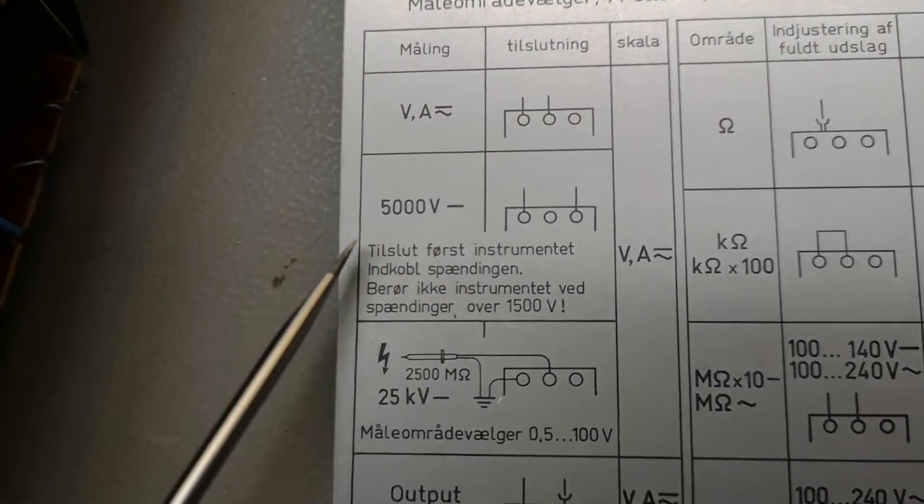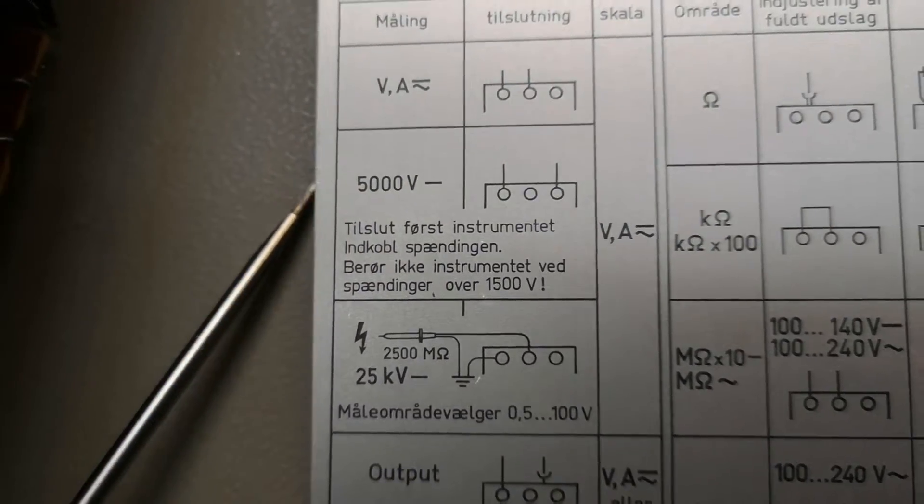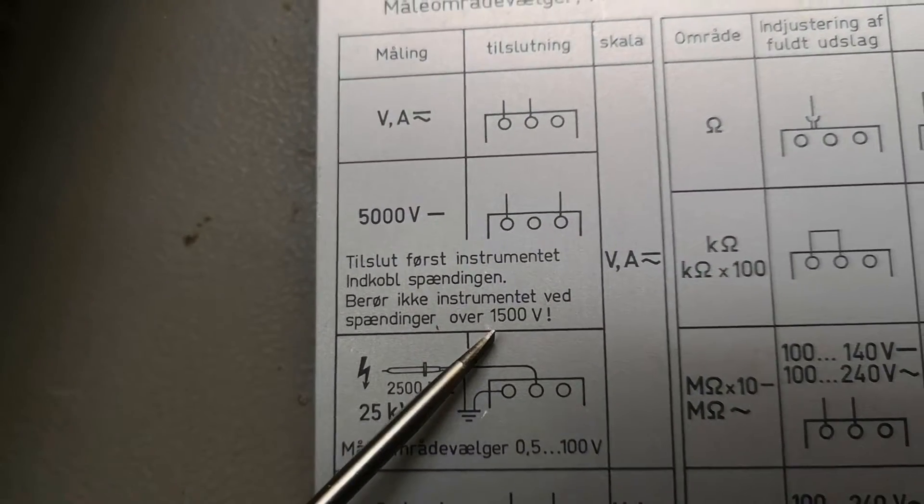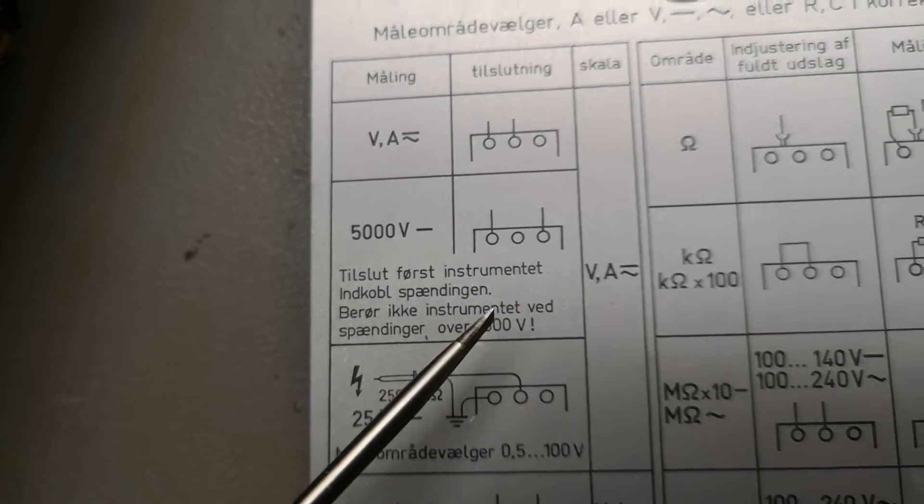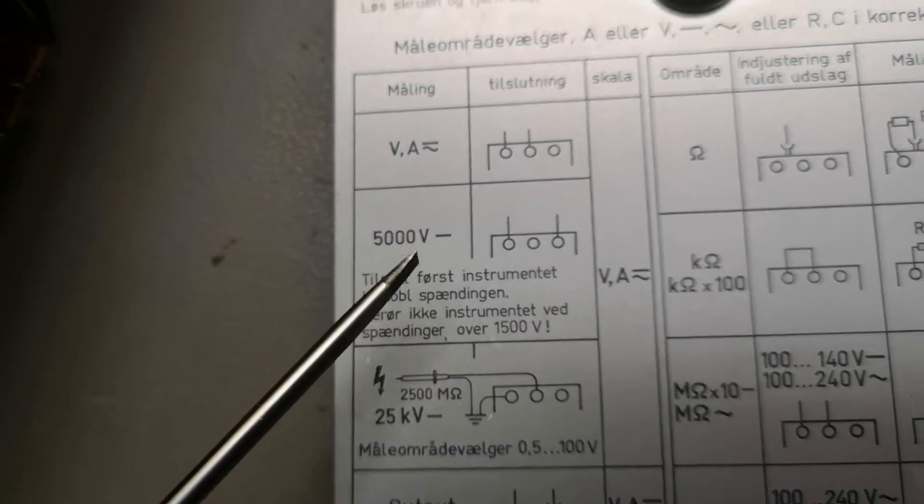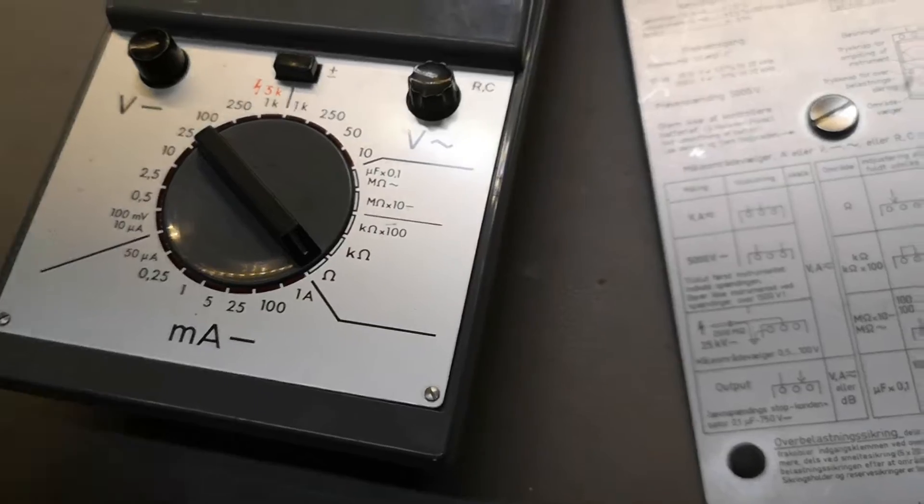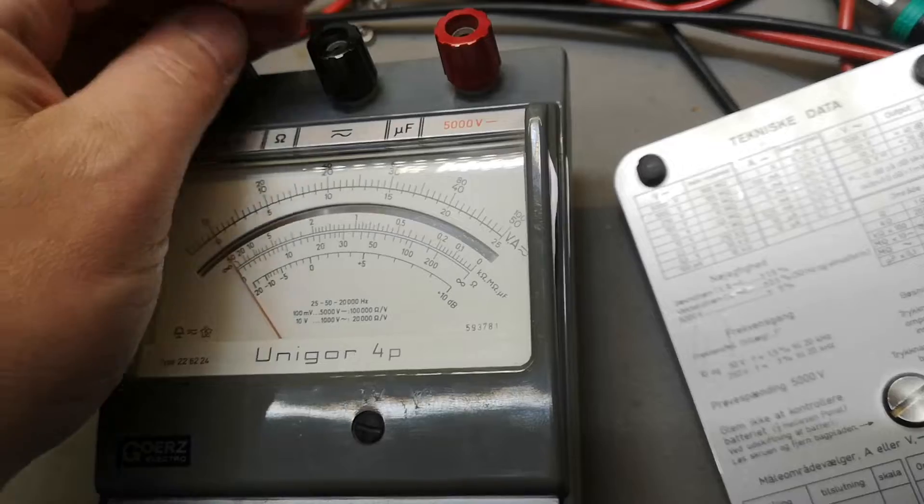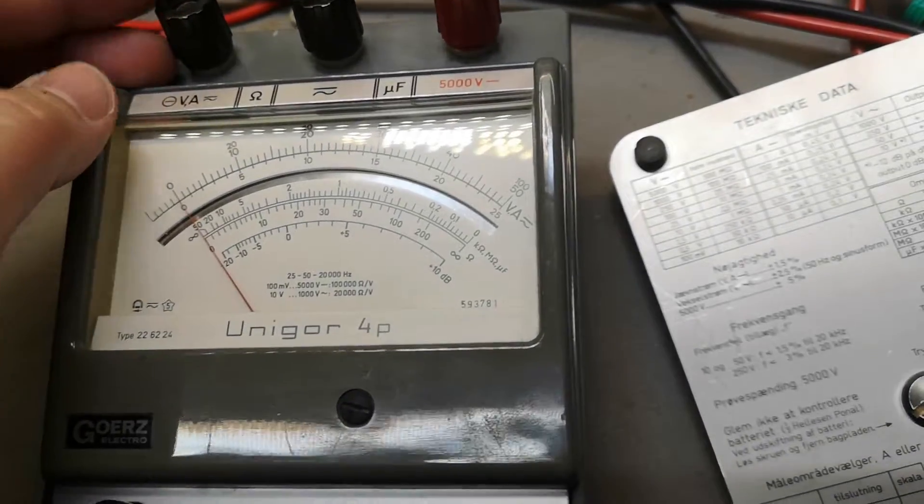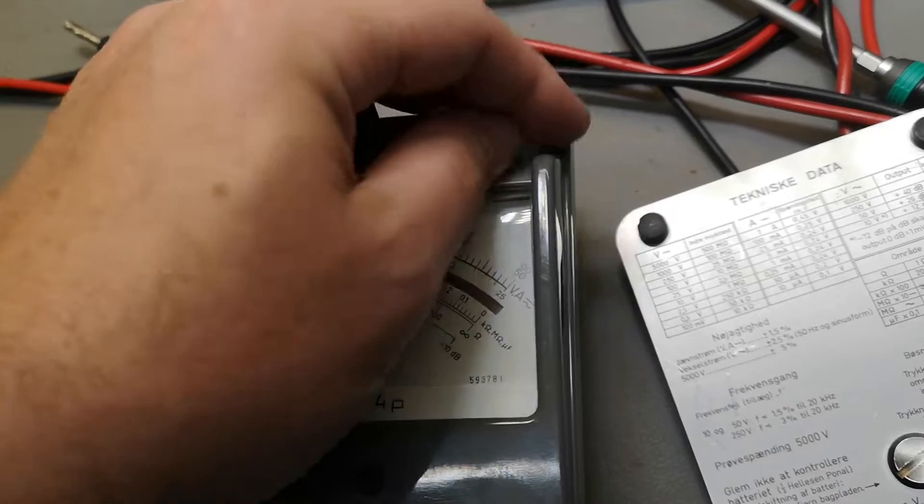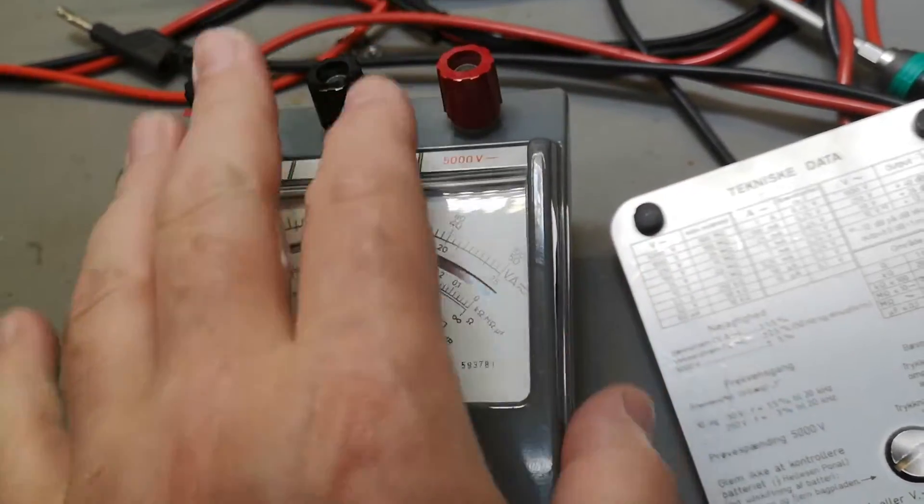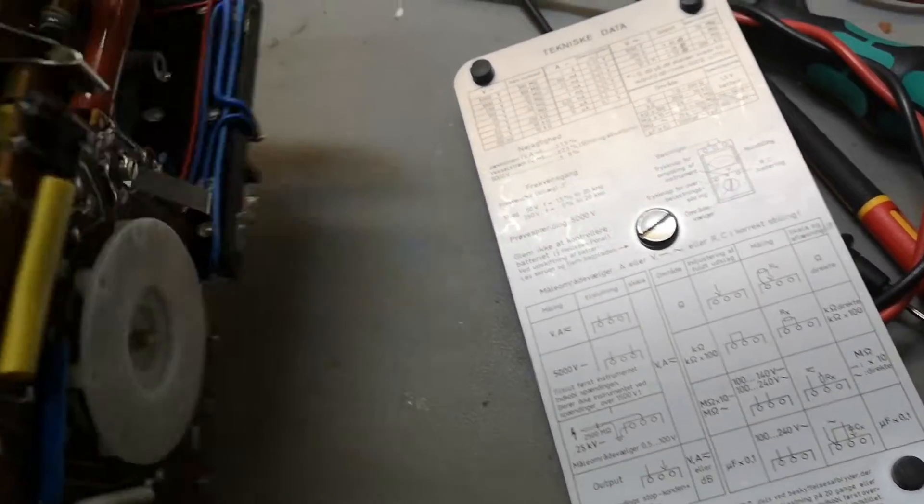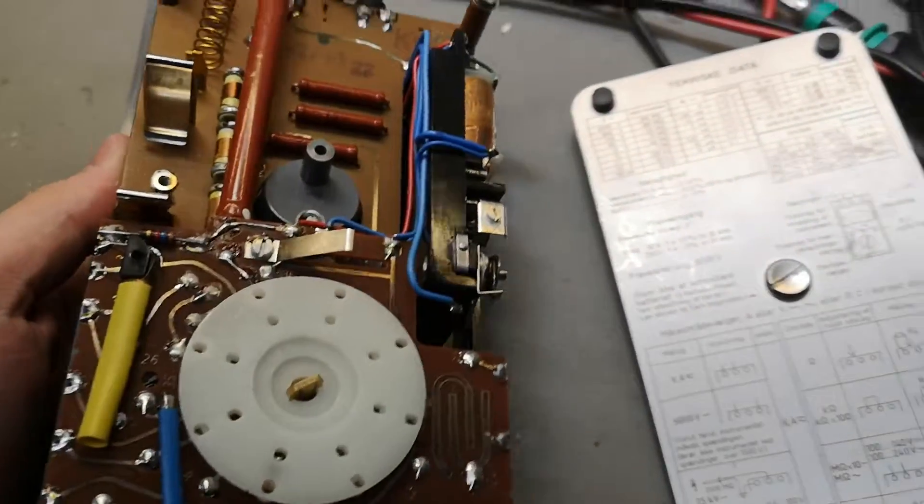When you're using this meter for 5000 volts, or it says here for more than 1500 volts, don't touch the instrument. I guess that applies to metal buttons or anything. They don't want you to touch here because the distances aren't safe anywhere. Let's look inside.